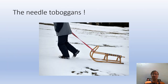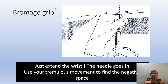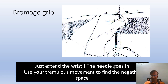The needle toboggans — that is very important — something like an instrument sliding on an icy surface. This is what is called the Brahmaj grip: you grip it with the hub and extend the wrist. That is what is needed and the needle goes in. You give a tremulous movement and extend the wrist. This is the Brahmaj grip, which I have routinely practiced for more than 30 years.